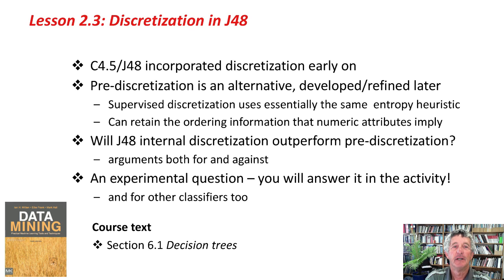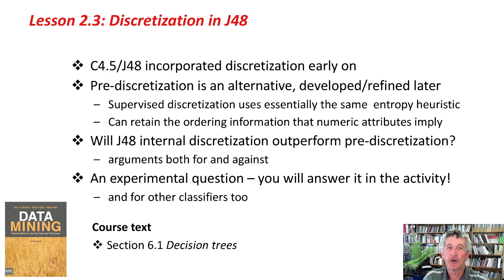C4.5 incorporated discretization very early on. Pre-discretization, as we've seen, is an alternative which has been refined later. Supervised discretization uses essentially the same entropy heuristic as C4.5, and we can retain the ordering information that numeric attributes imply without repeatedly sorting them as we go down the tree. Will internal discretization in J48 outperform pre-discretization? There are arguments both for and against. It's an experimental question, and you will answer it in the activity associated with this lesson — not just for J48, but for other classifiers as well. Good luck with that, and I'll see you in the next lesson.